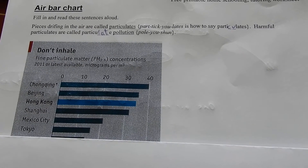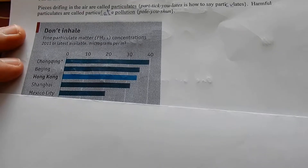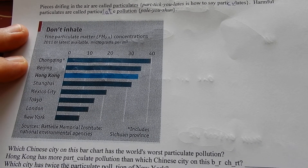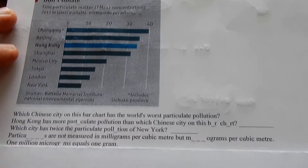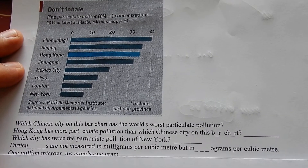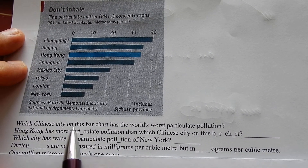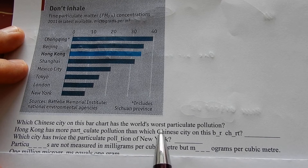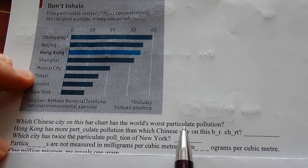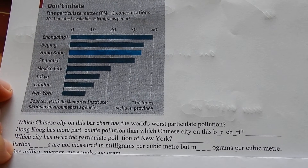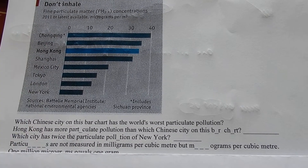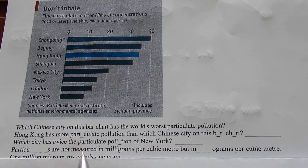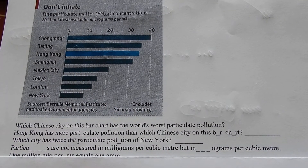Don't inhale. The Economist made this graph. Which Chinese city on this bar chart has the worst particulate pollution? Chongqing.